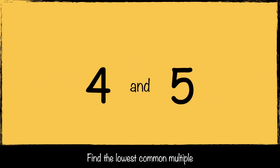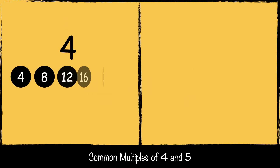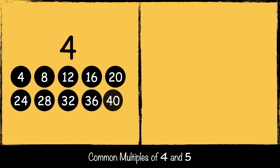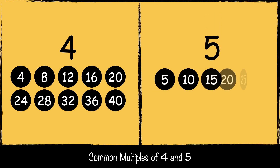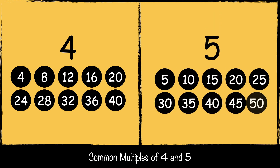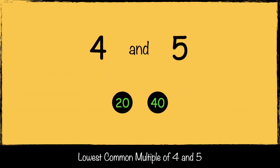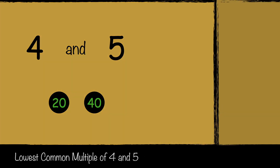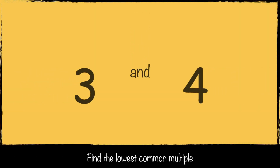Here are some of the multiples of four and some of the multiples of five. What multiples do they both have? 20 and 40. So the lowest common multiple of four and five is 20.